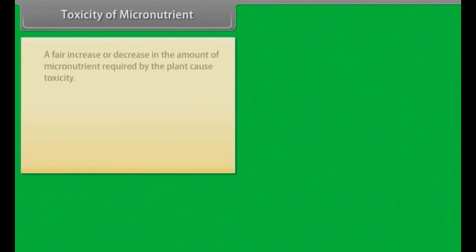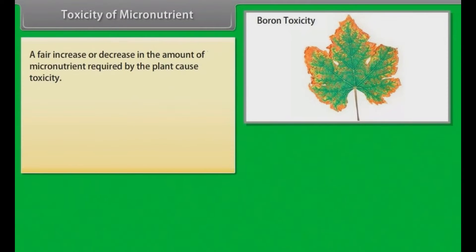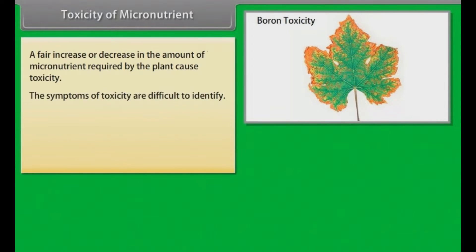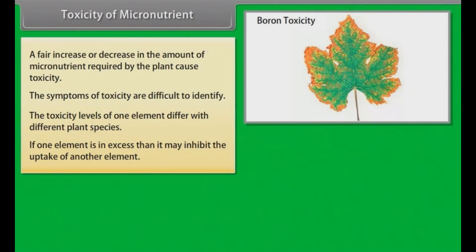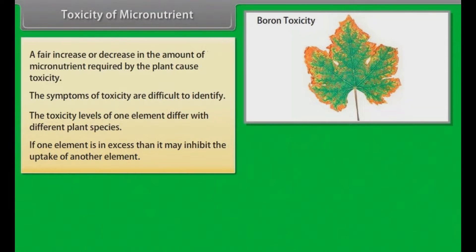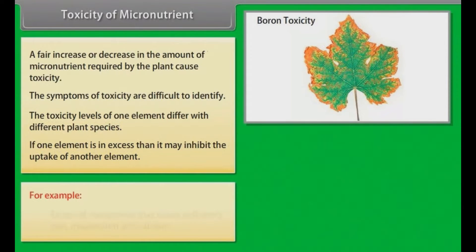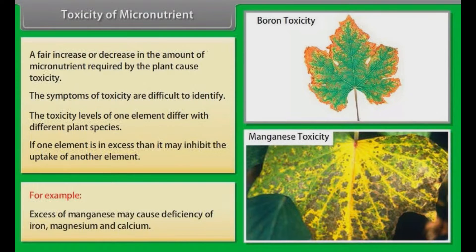Toxicity of micronutrients: a significant increase or decrease in the amount of a micronutrient required by a plant can cause toxicity. Toxicity symptoms are difficult to identify, and toxicity levels differ among plant species. If one element is in excess, it may inhibit uptake of another; for example, excess manganese may cause deficiency of iron, magnesium, and calcium.